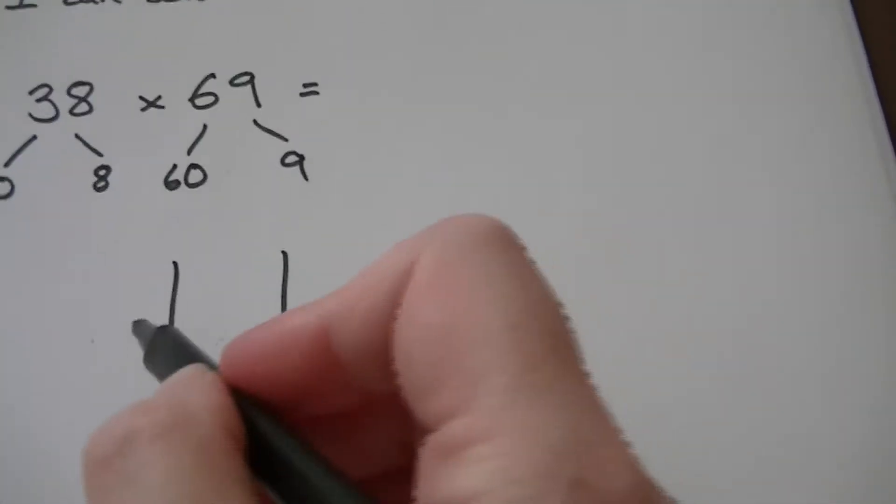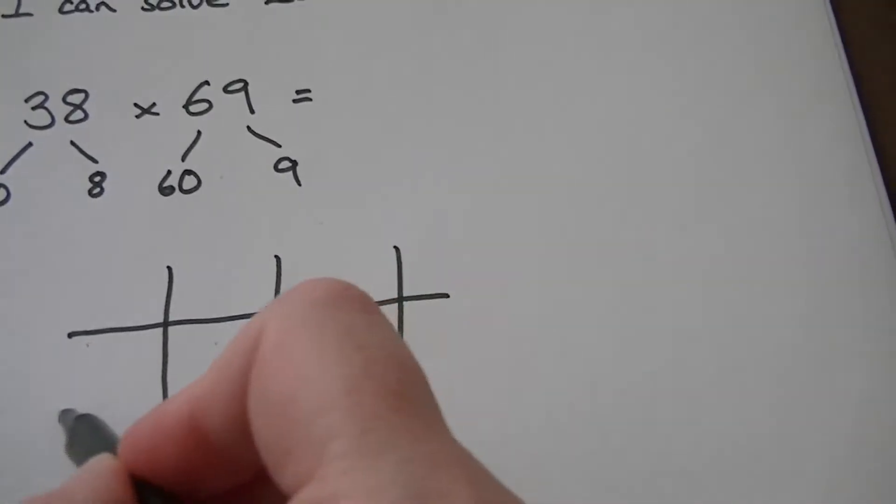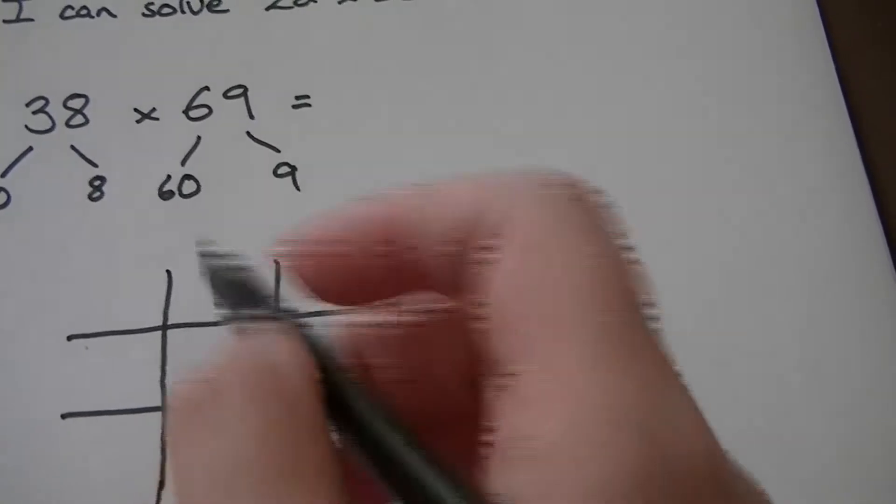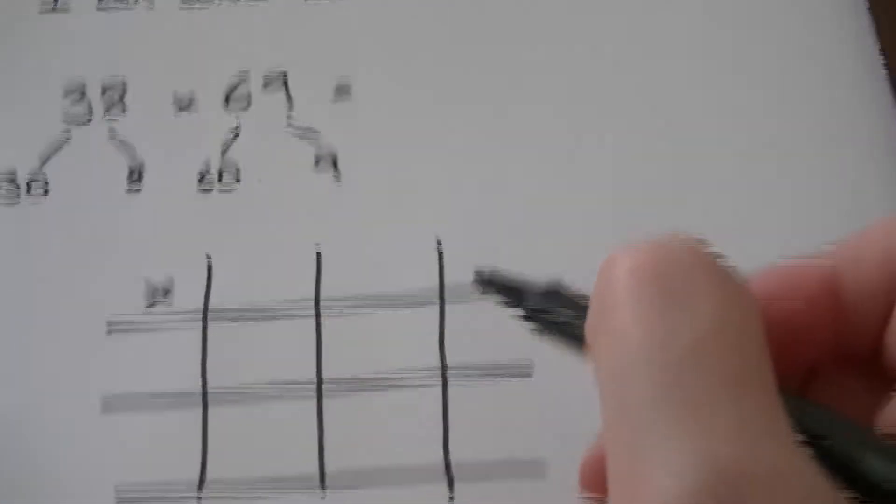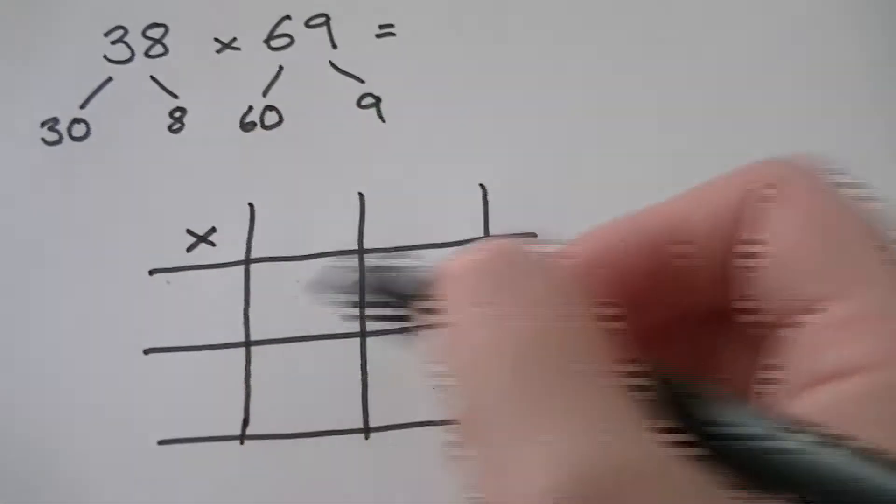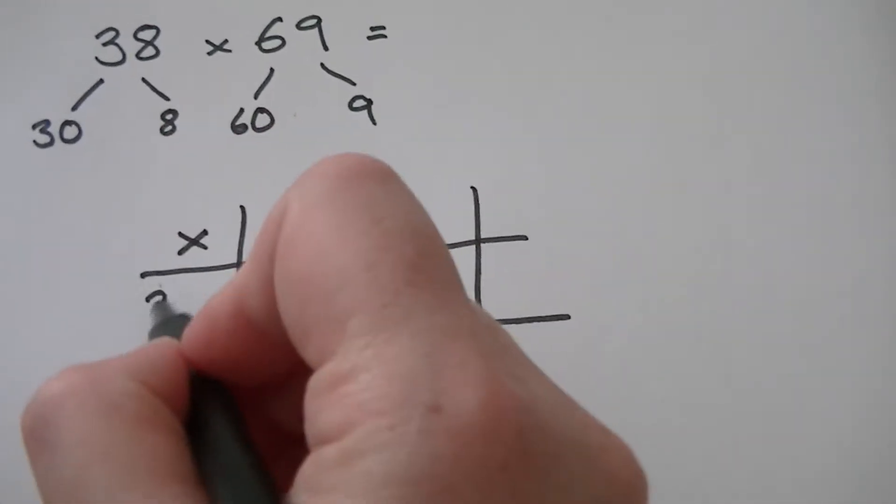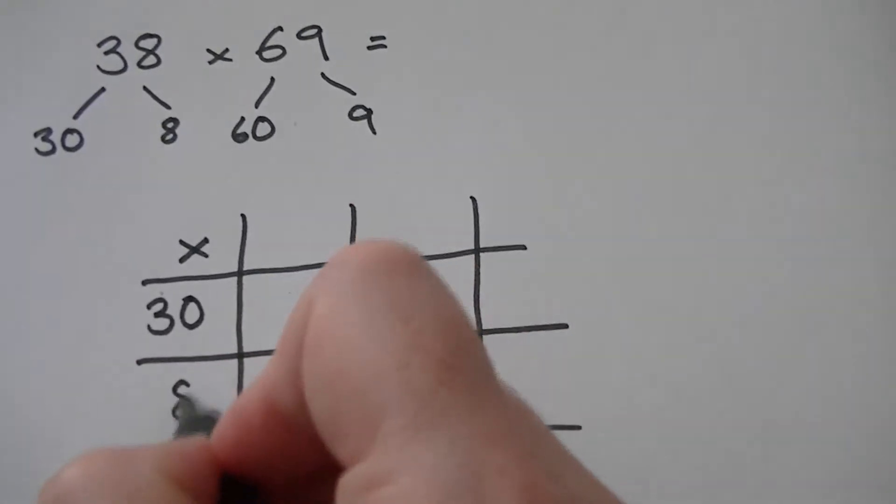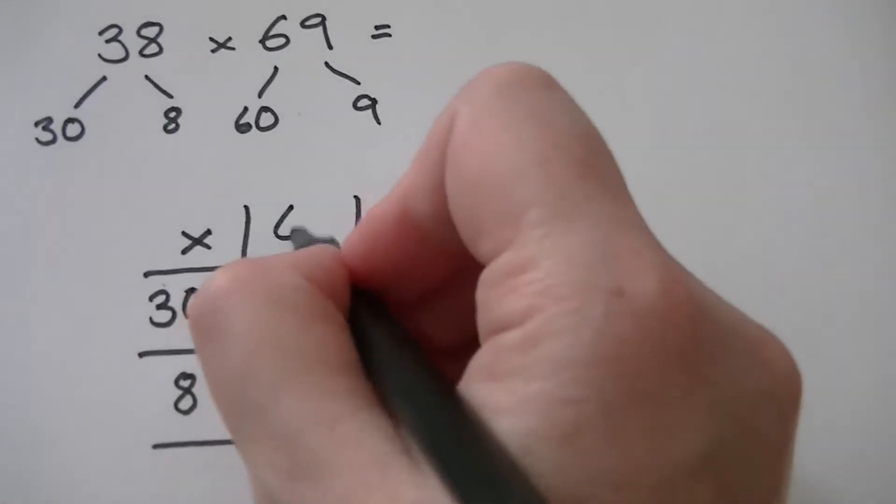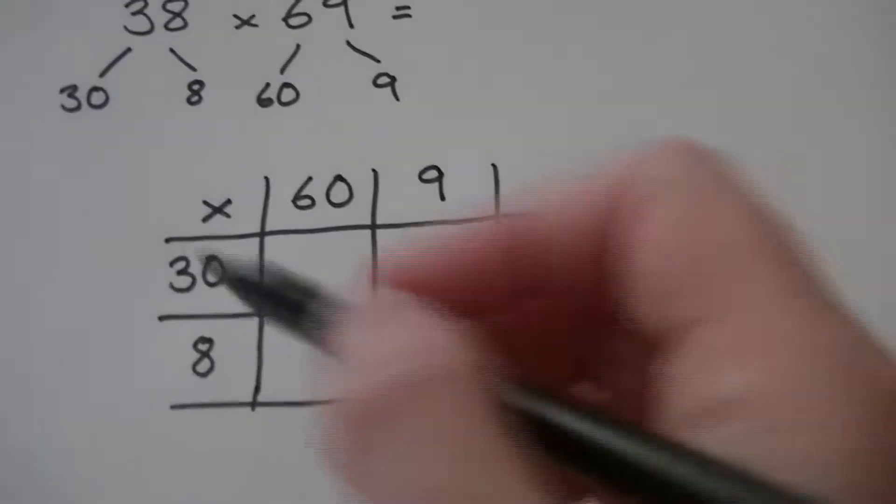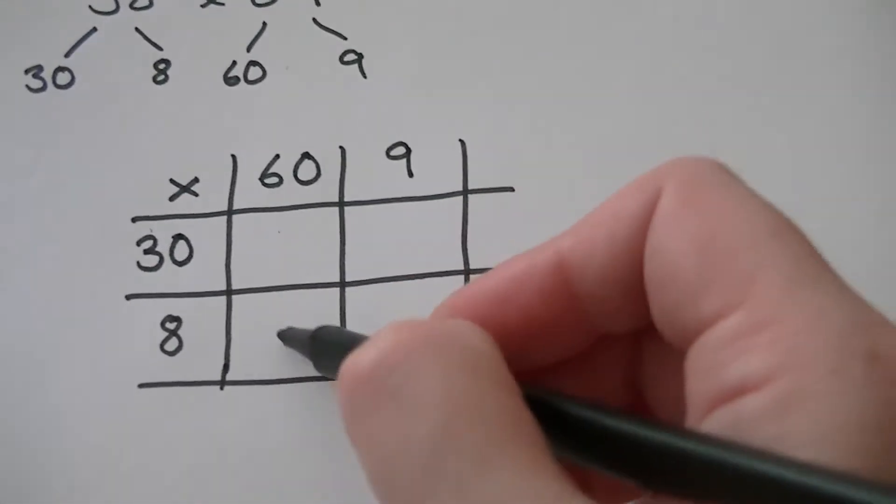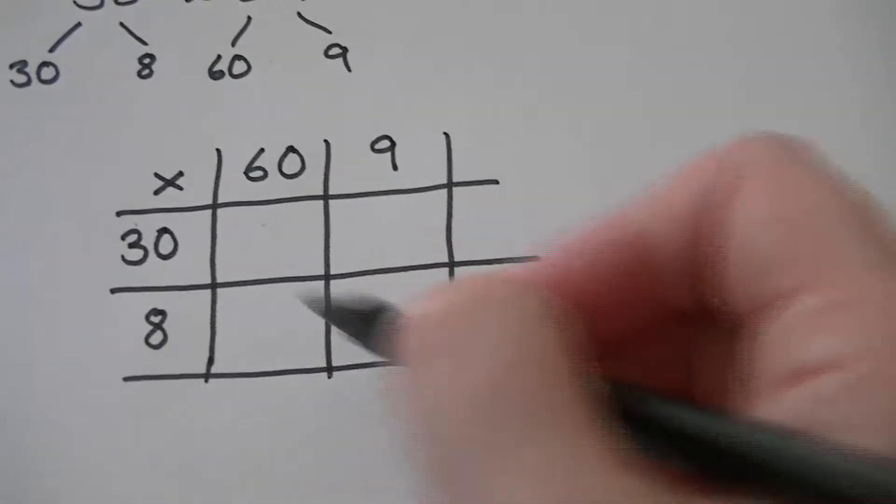This is often known as the grid method and you're going to put the partitioned numbers on the sides and on the top. So we've got 30 and 8, 60 and 9.